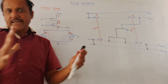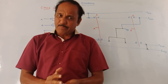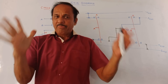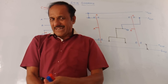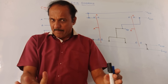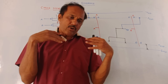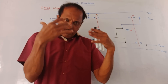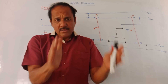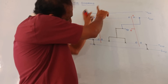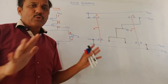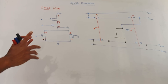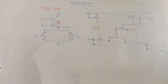Likewise, you can draw the STICK Diagram for any Boolean logical expression. The key steps are: from the Boolean equation (which must be in complementary form with a bar), first draw the CMOS diagram, and then using the same technique, draw the STICK Diagram. That's it for today's session — thank you, and thanks a lot for watching this video.